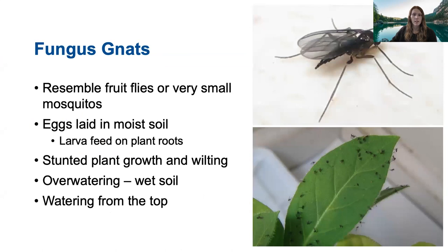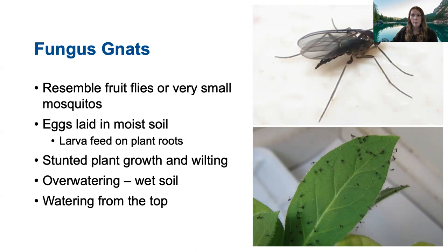Fungus gnats are a very common pest of seedlings and potted plants both indoors and outside. They're very small, resembling fruit flies or tiny mosquitoes, with very long legs. You can see them flying around your seedlings or pots, and sometimes crawling on the surface of the soil. Much like seedlings need moist soil to germinate, fungus gnats need that moist soil to survive and lay their eggs — which is why reducing moisture is really important in their prevention and control. The larvae live in the soil and feed on your plant's roots, which is detrimental to young seedlings just starting to develop their root system. This feeding can cause stunted growth, wilting, and in a really bad infestation, it can kill your seedlings entirely.